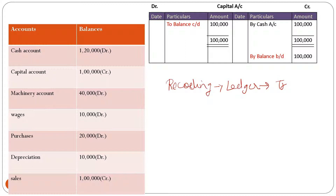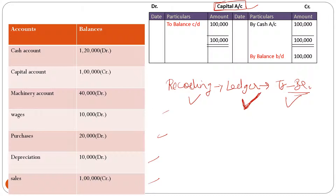From the recording step we moved to preparation of different accounts — ledger posting. Now from ledger posting we move to the trial balance. In the ledger we have prepared accounts for capital, for cash, for machinery, for wages, for purchases, for depreciation, sales, and every transaction which has been recorded in the journal. After preparation of the ledger, we'll now move to preparation of the trial balance.